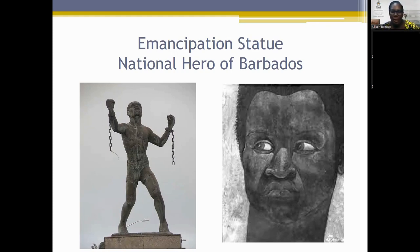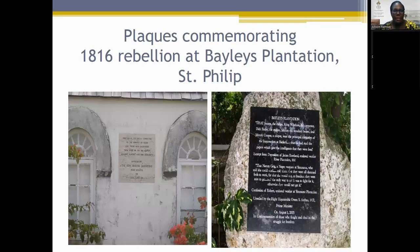On the left is the emancipation statue commemorating Bussa and his leadership in the 1816 rebellion — an artist's depiction since we don't know what he looked like. The statue, one of Barbados's monuments, shows him with broken chains symbolizing his effort to free himself and others. Bussa is a national hero of Barbados. Bailey's plantation in St. Philip, where Bussa was from, still exists, and two plaques placed by former prime ministers commemorate Bussa and all involved in this quest for freedom.